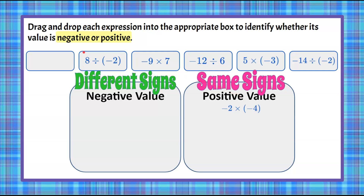Next: a positive 8 divided by a negative 2. Clearly a positive and a negative — different signs — so we're going to relocate that division here. 8 divided by negative 2 is negative. Our next is negative 9 multiplied by 7. Two different signs, so we're going to have a negative product.